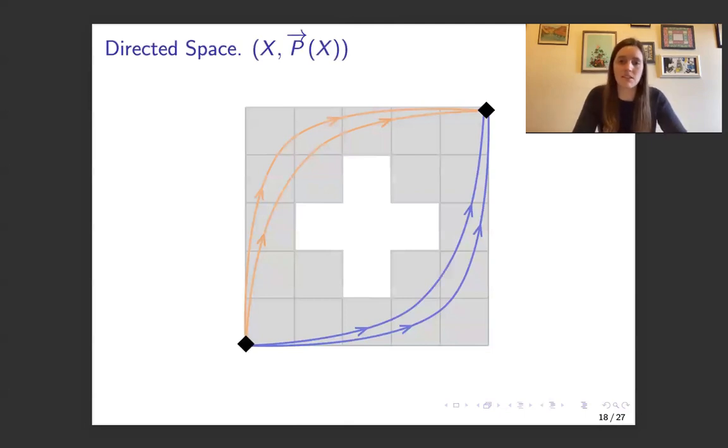So our directed space is we're going to start off with the topological space. So in our example is the Euclidean cubical complex, which is a subspace of R^N endowed with that standard topology. And then we're going to have a directed path space. And for our Euclidean cubical complexes, we're considering paths that are non-decreasing in all coordinates. And so in orange and blue we see some examples of directed paths.